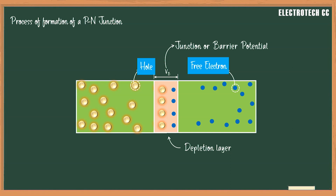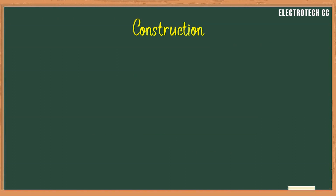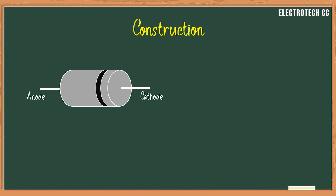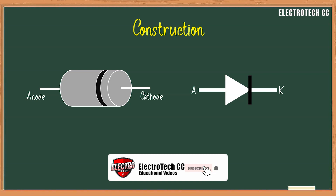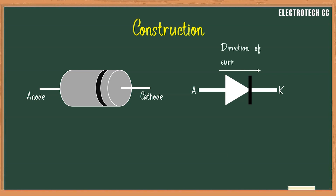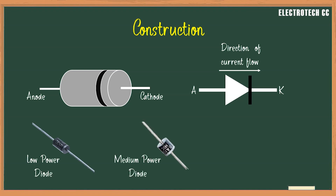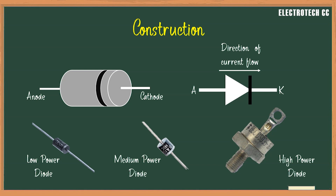The width of the depletion layer depends on the doping level. For heavy doping, the width of the depletion layer is very small. A PN junction diode is a two-terminal device consisting of a PN junction formed either in germanium or silicon crystal. The P-type region is called the anode and the N-type region is called the cathode. The arrowhead indicates the conventional direction of current flow when forward biased. Low and medium current diodes are usually mounted by soldering their leads to the connecting terminals, while high current stud-mounted diodes generate a large amount of heat.